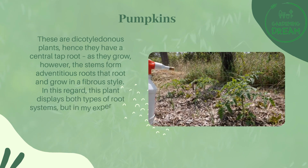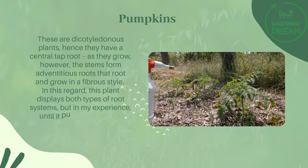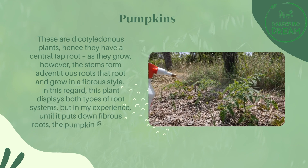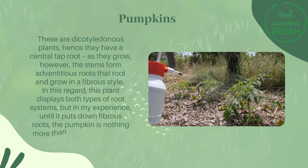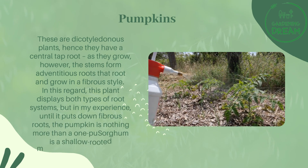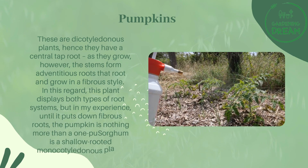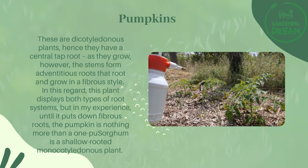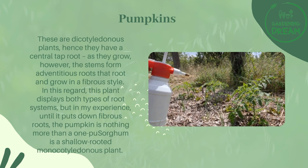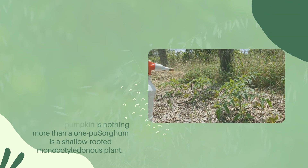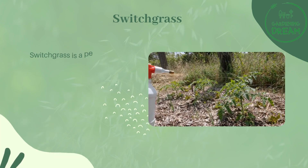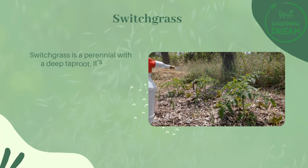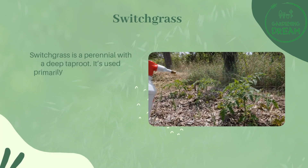In this regard, the pumpkin displays both types of root systems. Sorghum is a shallow-rooted monocotyledonous plant. Switchgrass is a perennial with a deep taproot.